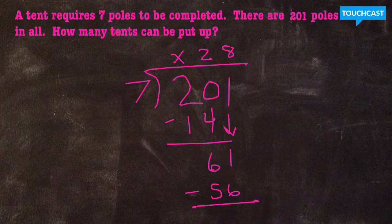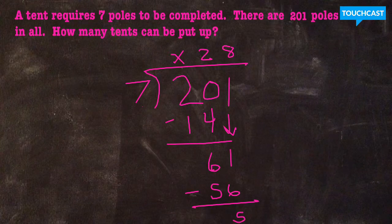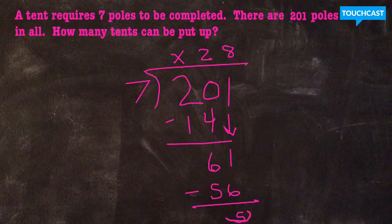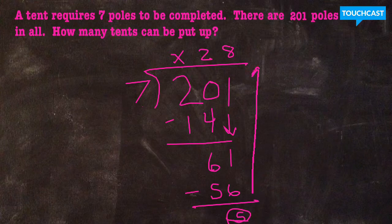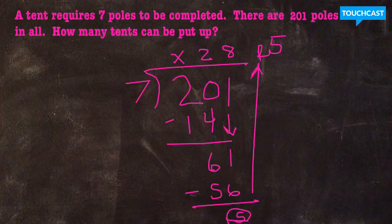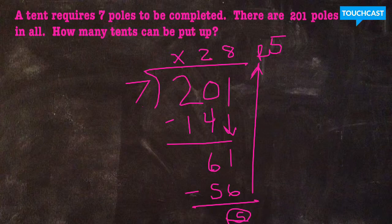Now I need to re-divide and say how many times does seven go into 61. I know that seven times eight is 56, so I would say that's close without going over. Eight times seven is 56. If I do 61 minus 56, I come up with 5. There's nothing left to bring down, which tells me this is the end of my long division equation. So my final answer to this division equation is 201 poles divided by seven poles per tent gives me 28 tents with a remainder of 5.